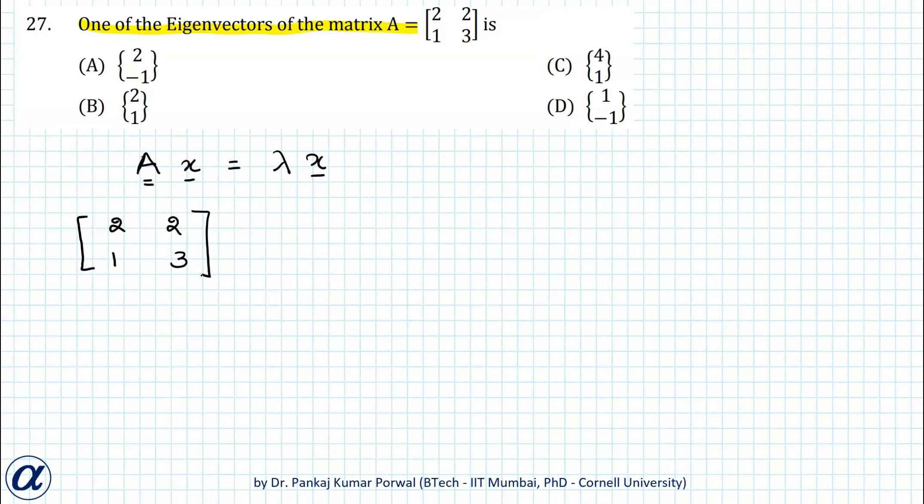If I multiply this matrix with the given vectors, let's take choice A: [2,-1]. I'll write the equal sign a little far away so that I can write my choices B, C, D and the result of the product in the next column, so I don't have to write A again and again.